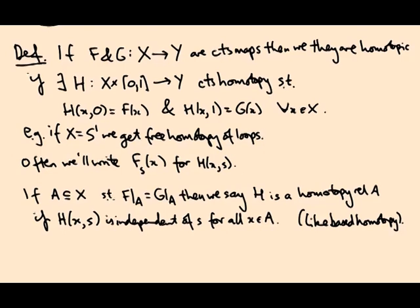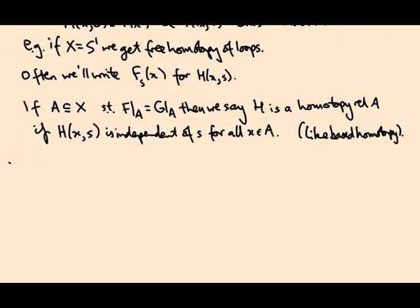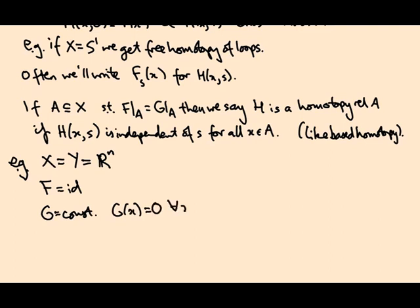So let me give you an example. Let X = Y = R^n and let F be the identity map from R^n to itself and let G be the constant map. So G(x) equals maybe the origin for all x.